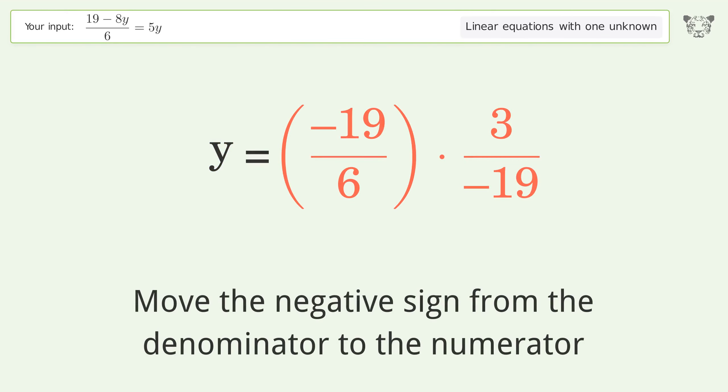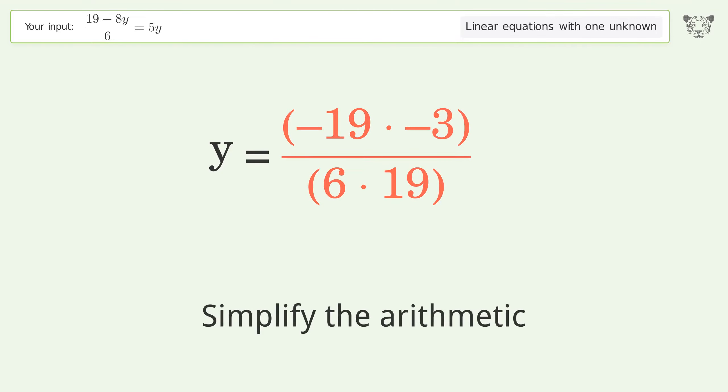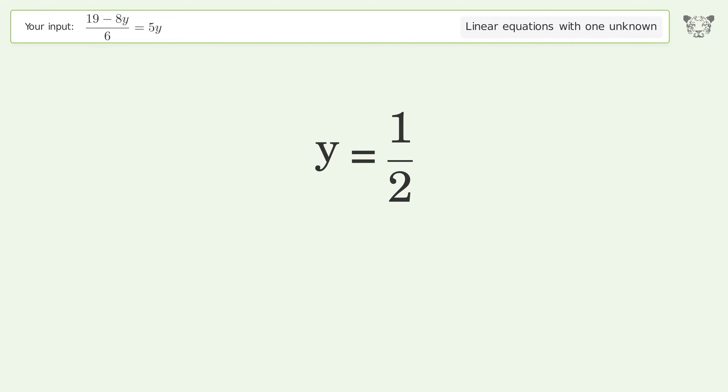Move the negative sign from the denominator to the numerator. Multiply the fractions. Simplify the arithmetic. And so the final result is y equals one over two.